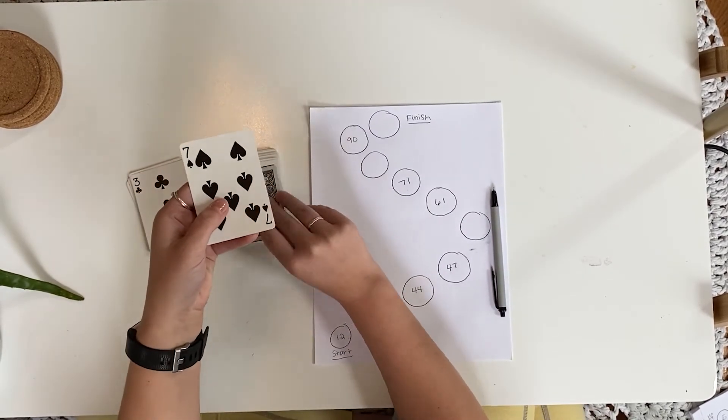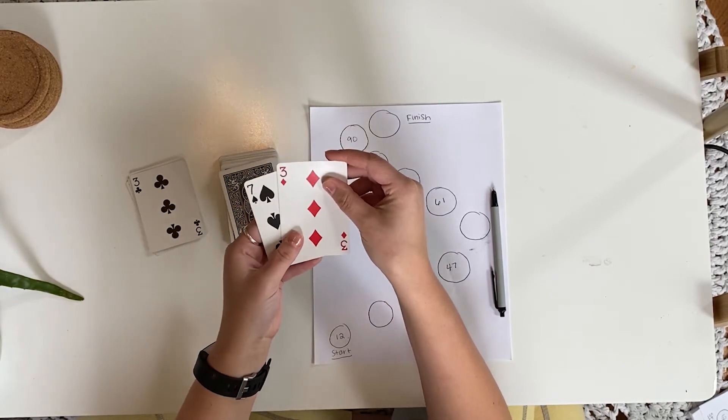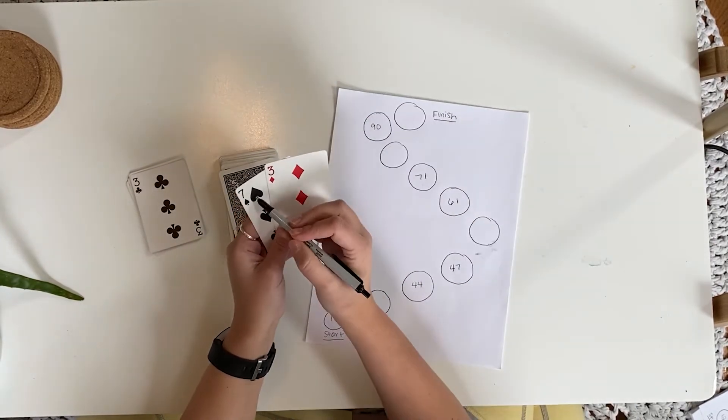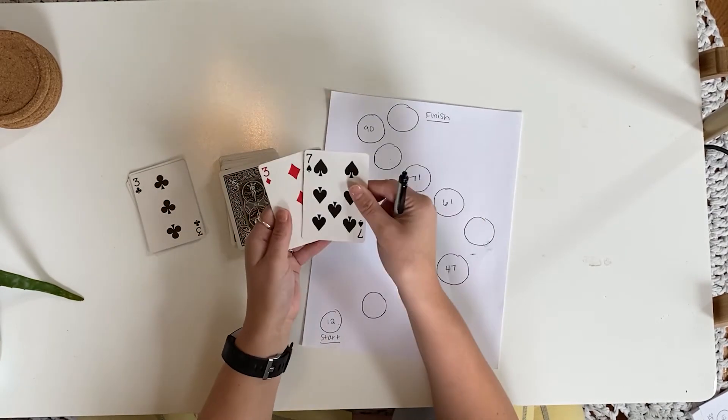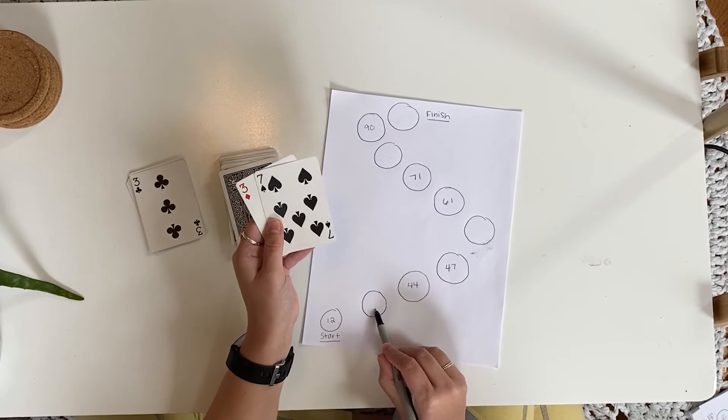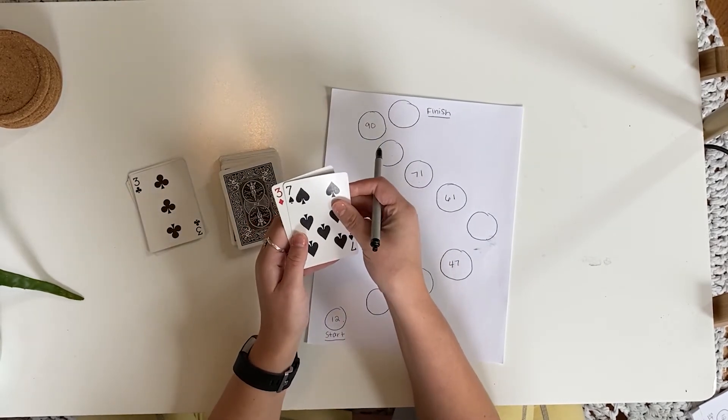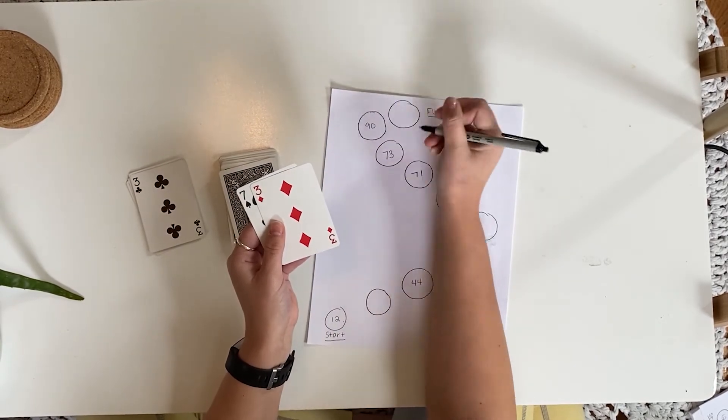If a team has 12 blank, 44, 47 blank, 61, 71 blank, 90 blank, and turns over a 7 and a 3, they could put a 37 between 12 and 44 or a 73 between 71 and 90.